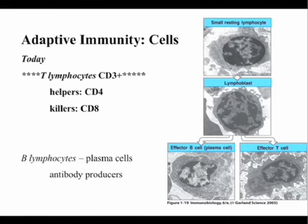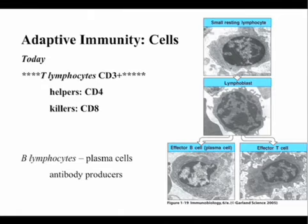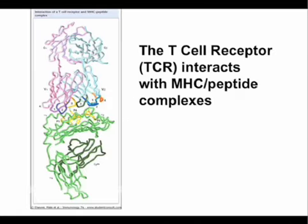Moving on to T lymphocytes. T lymphocytes are all CD3 positive, and then you have two main subsets — one subset that is CD4 positive and one that is CD8 positive. These are the helper T cells and the killer T cells. Each of these populations is further subdivided into different functional groups, which we'll talk about later. The T cell receptor interacts with the MHC class 1 or class 2 molecule with antigen present in the groove.